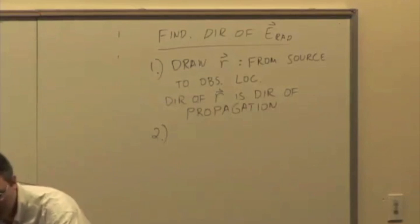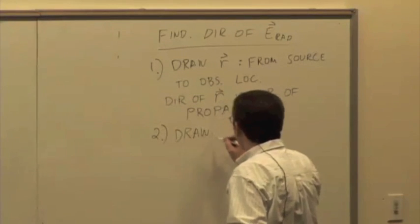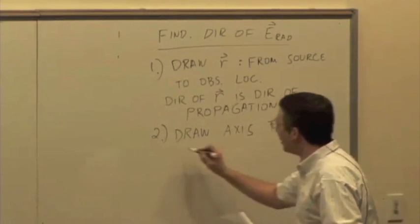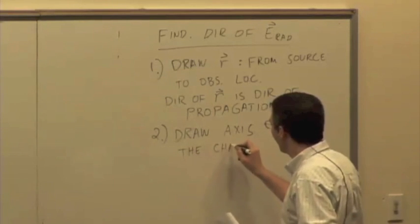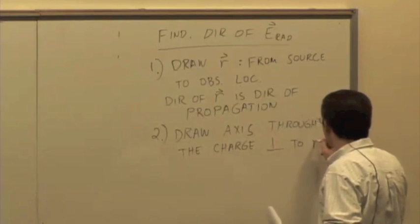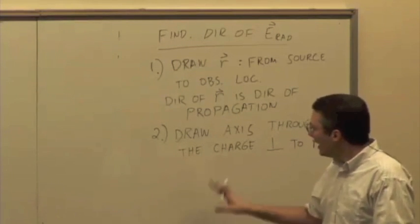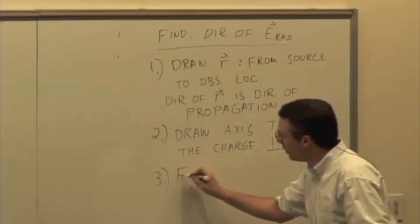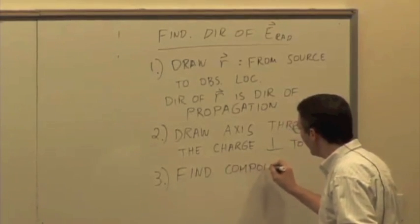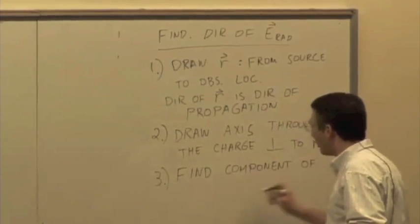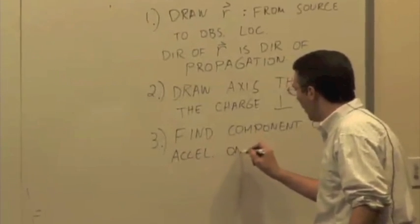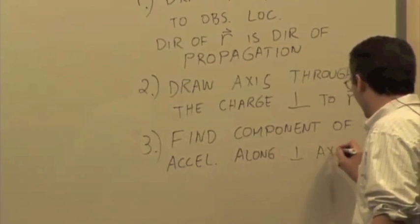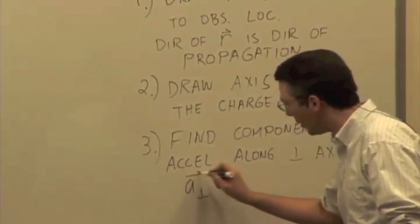Step 2: draw an axis through the charge that is perpendicular to r, in the plane of r and a. Then find the component of the acceleration along the perpendicular axis. That's what we mean by a sub-perpendicular vector.